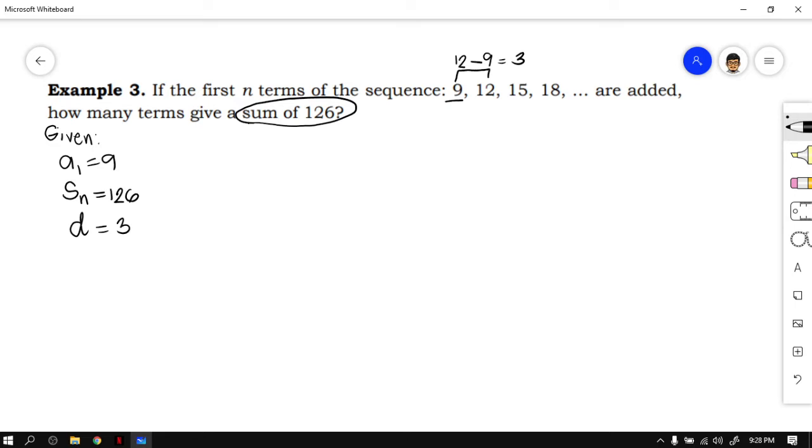If you would like to make sure, you can also use 15 minus 12, that is 3. 18 minus 15, that is also 3. So the common difference is 3. And we are looking for the number of terms. How many terms has the sum of 126?